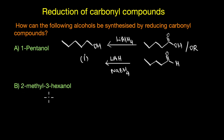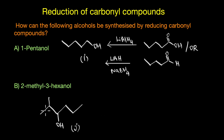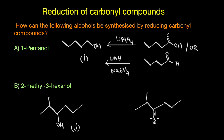The second target is 2-methyl-3-hexanol, where the OH group is at the C3 position — this is a secondary alcohol. The only way to obtain a secondary alcohol is to reduce a ketone at that position. So the starting reagent should be the corresponding ketone, 2-methyl-3-hexanone, which on reduction with either lithium aluminium hydride or sodium borohydride gives the secondary alcohol.